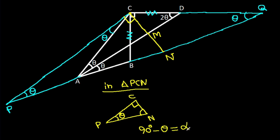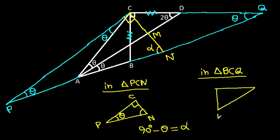Suppose this angle is alpha. This angle is alpha. And considering angle BCQ: this angle is 90 degrees, which means this angle is theta, so this angle will be 90 degrees minus theta, that will be alpha. This angle is alpha.